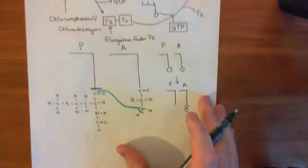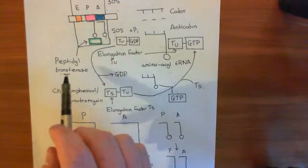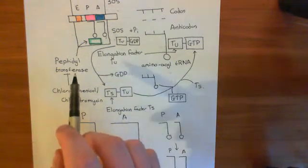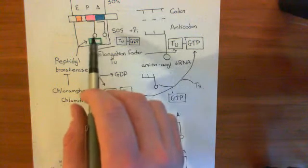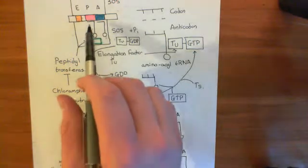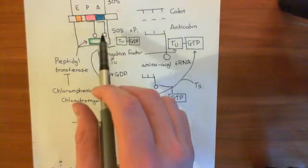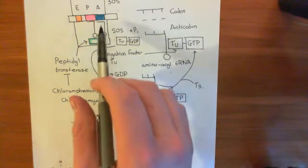We've seen how chloramphenicol blocks the activity of the enzyme peptidyl transferase, and therefore prevents the ribosome from transferring the amino acid on the tRNA in the P site onto the tRNA in the A site.